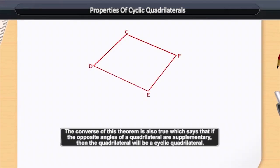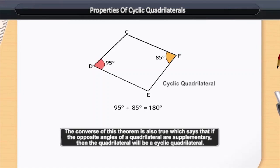By using this property, we can find whether it is a cyclic quadrilateral or not. For example, look at figure CDEF. We will mark two angles: angle D is equal to 95 degrees and angle F is equal to 85 degrees. Now, look at this quadrilateral and check whether it is cyclic or not. To find this, we connect them together and get that 95 degrees plus 85 degrees is equal to 180 degrees.